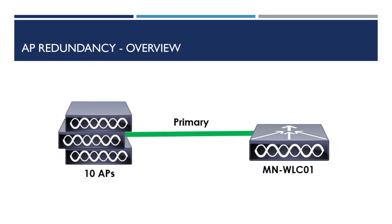Having APs online and associated to a wireless controller is vital to providing a stable wireless service to users. Let's start by taking a look at an example wireless network. Here we've got 10 APs associated to a single wireless controller, WLC01. What happens if our wireless controller was to fail? The chances are our 10 APs associated to it would fail along with it.